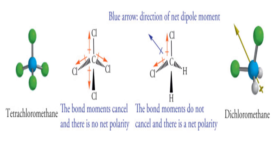Consider CCl₄ (carbon tetrachloride), which has a tetrahedral shape. One chlorine atom's dipole moment has an equal and opposite resultant compared to the other three chlorine atoms. Since the shape is tetrahedral, the dipole moment resulting from three chlorine atoms is cancelled by the fourth. Hence, tetrachloromethane (CCl₄) has a net dipole moment of zero, because all four chlorine atoms are in different directions and their net dipole moments cancel each other.